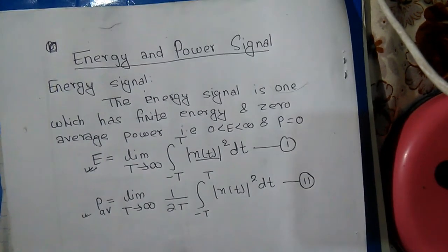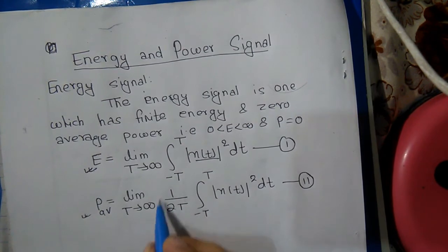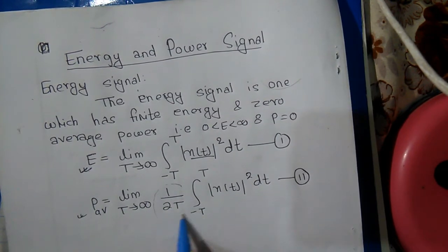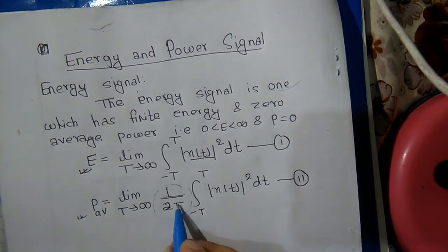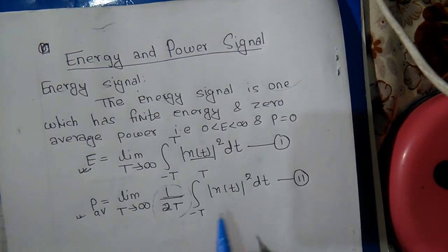Average power is given by this equation. The only change is it is divided by 1 over 2T. This is average power.